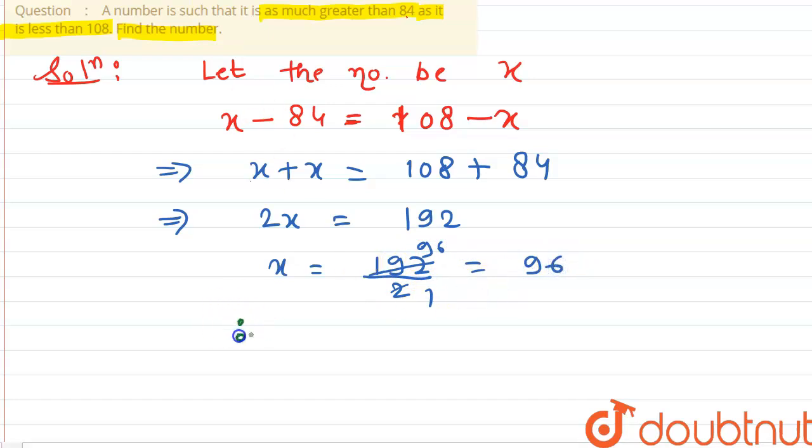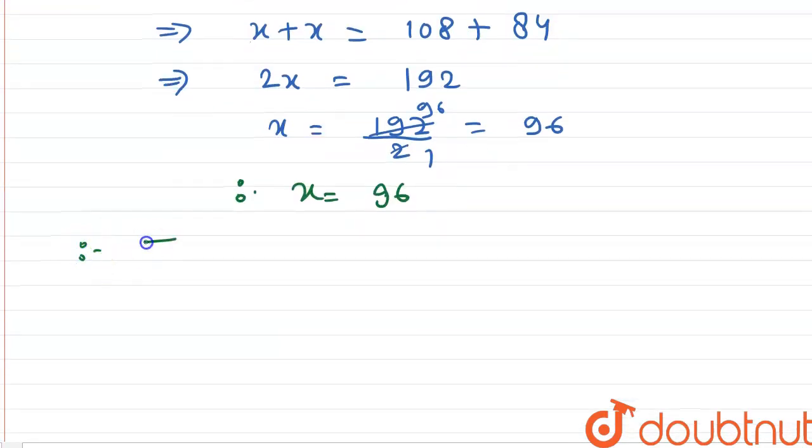So we say that the number is, therefore the number is 96. Here this is the answer.